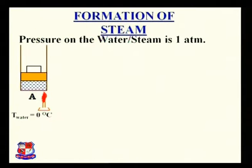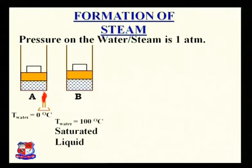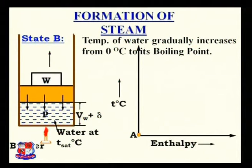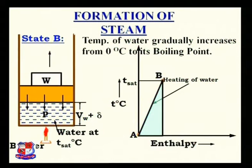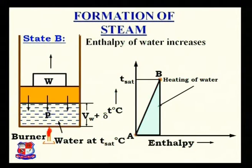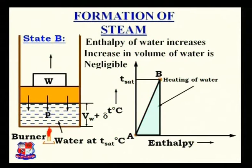When we heat the water at state A, its temperature increases and reaches the boiling point temperature; that condition is known as saturated liquid. The temperature of water gradually increases from 0°C to its boiling point, shown on the temperature-enthalpy diagram as a line A to B, where the temperature at B is the saturation temperature. The line AB shows the heating of water, and the enthalpy increases from HA to HB. There is also a very negligible increase in volume of water from Vw to Vw + delta.